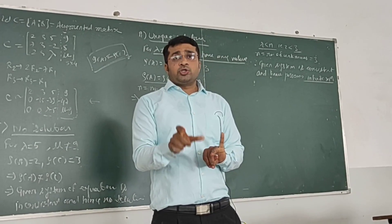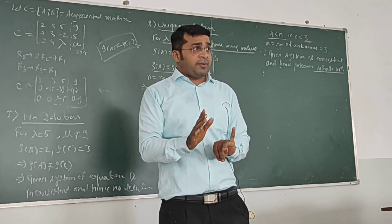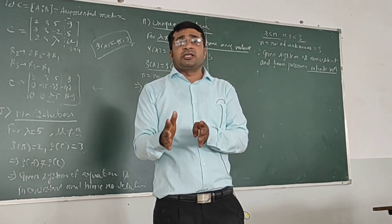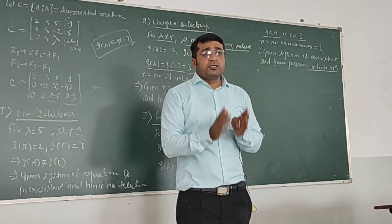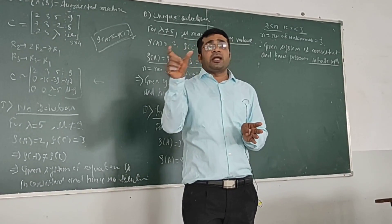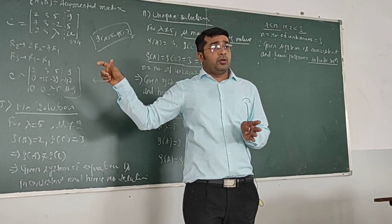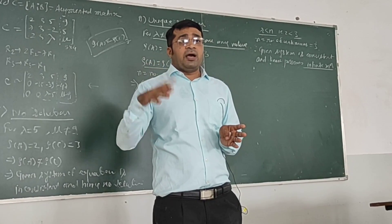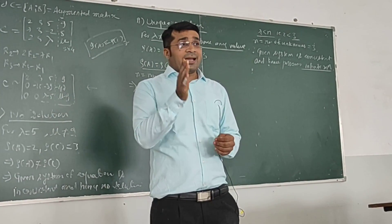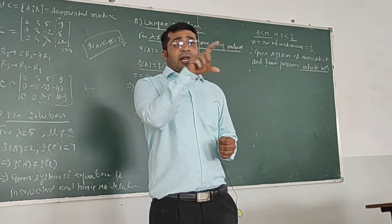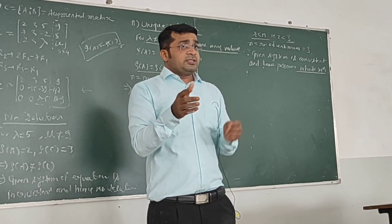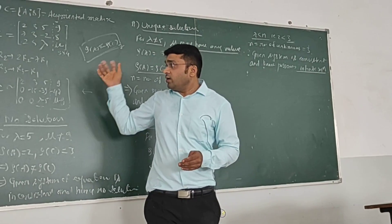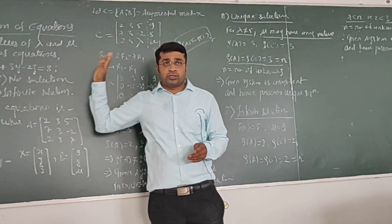To summarize: for no solution, rank of A should not equal rank of C — the system is inconsistent. For unique solution, rank of A equals rank of C and both equal the number of unknowns — the system is consistent with a unique solution. For infinite solution, rank of A equals rank of C but is strictly less than the number of unknowns — the system is consistent with infinitely many solutions. This is how we investigate the values of lambda and mu for such questions.